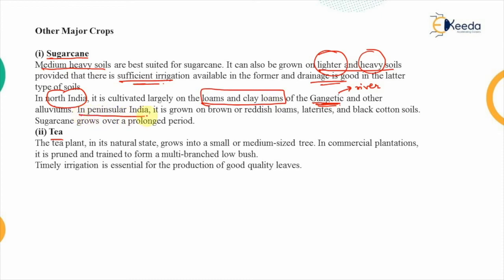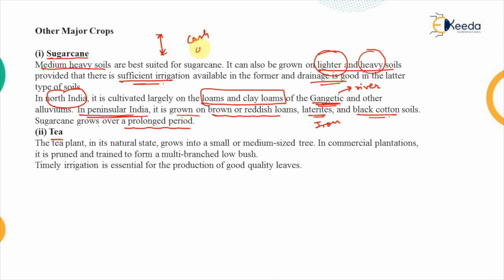In peninsular India, sugarcane is grown on brown or reddish loams, laterite soil rich in iron, and on black cotton soil. Sugarcane grows over a prolonged period — it is grown throughout the year and is a type of cash crop.